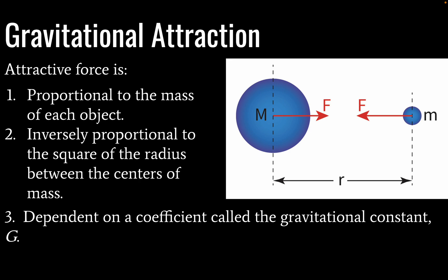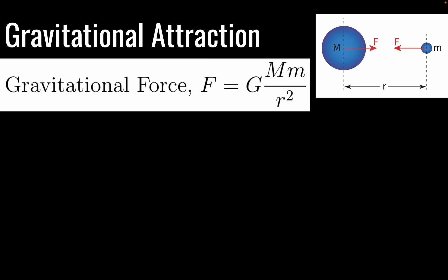Third, it's dependent on a coefficient called the gravitational constant, which we call G. So here's our formula then, putting those three factors together. Gravitational force is equal to G times the mass of our larger body times the mass of our smaller body divided by radius squared. Our gravitational constant is 6.67 times 10 to the negative 11 newton meters squared per kilogram squared.